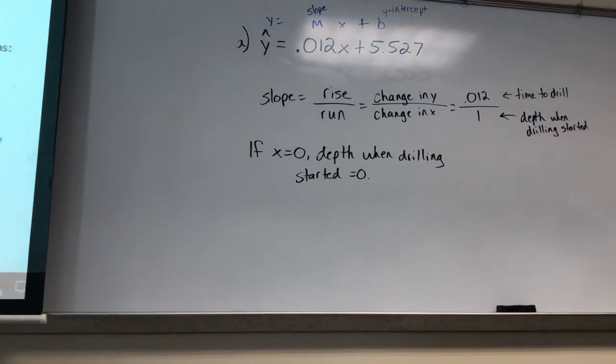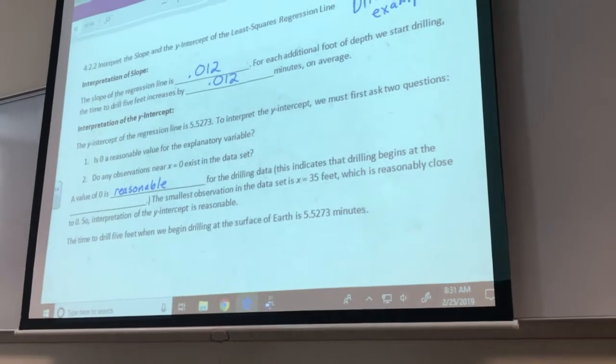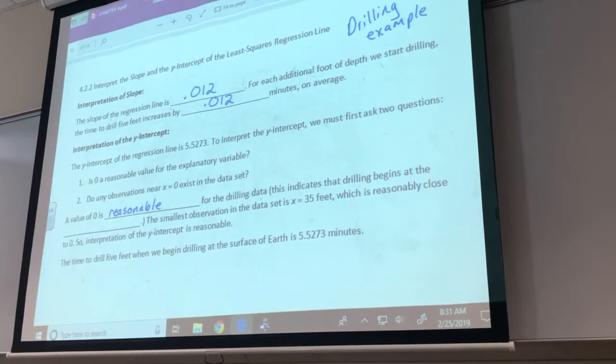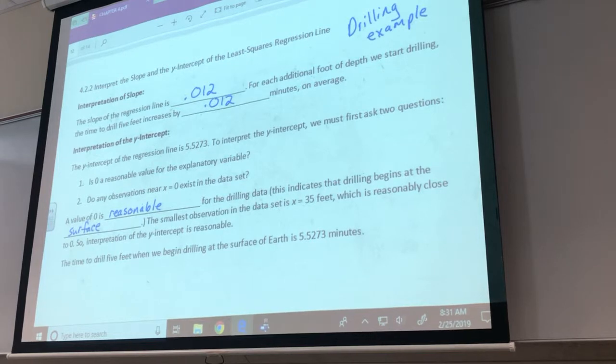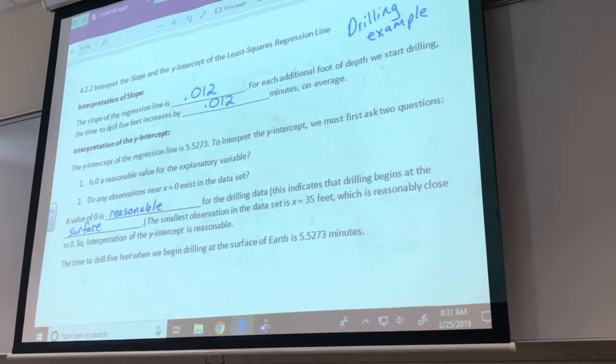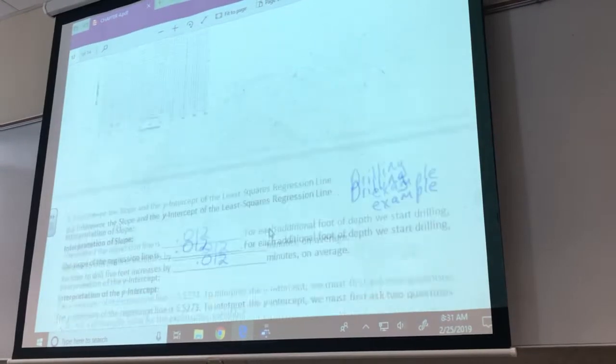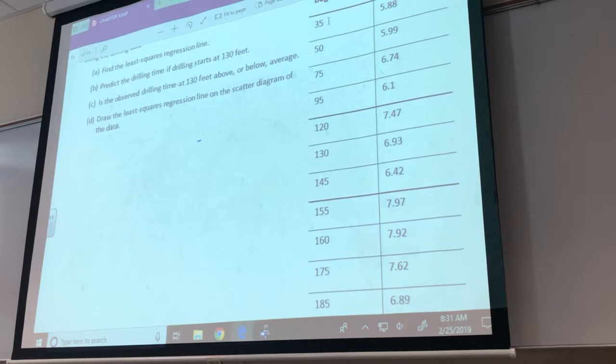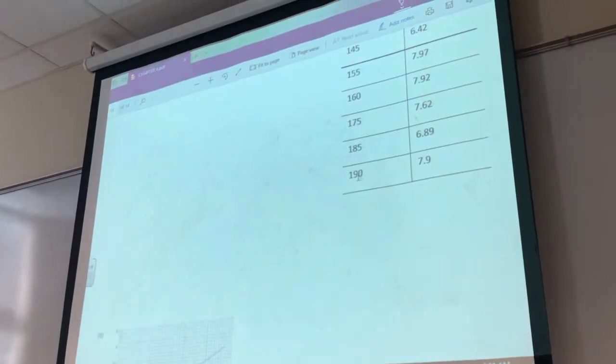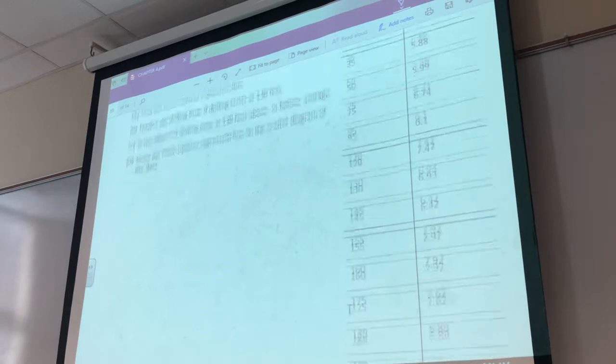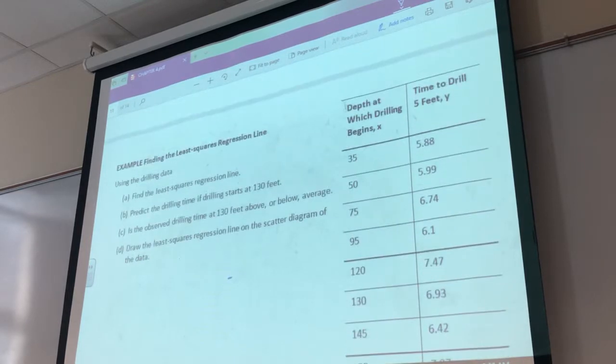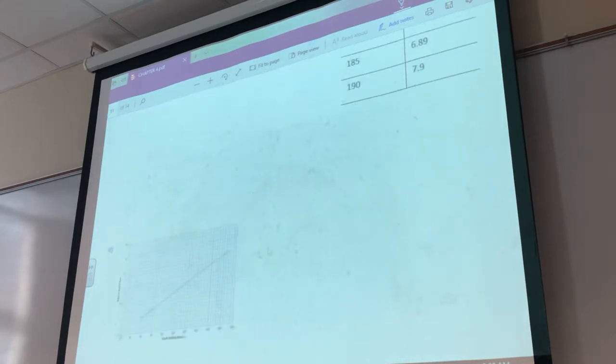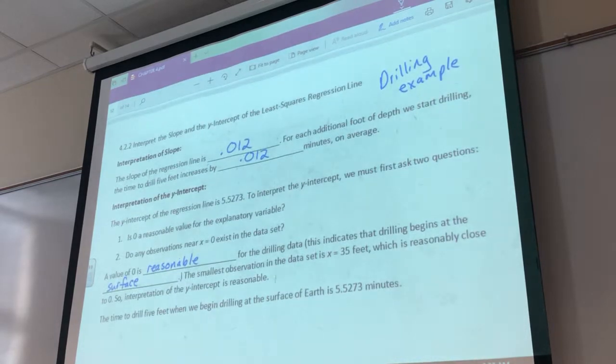So we'll say a value of 0 is reasonable for the drilling data. This indicates that drilling begins at the surface. So that's okay. And then here they say the smallest observation is 35 feet, which is reasonably close to 0. So if you look at 35, you think it's really not all that close to 0. But if you look at the other functions you have, it starts at 35 and the largest one you have is 190. So if you look at how big this data set is from 35 all the way up to 190, 0 isn't too far away from 35. If you look at your graph, here's your dots. 0 is over here. So it's not too far away.